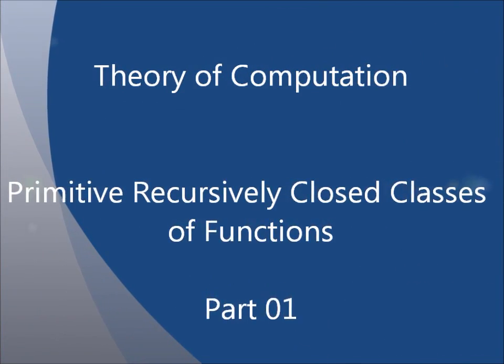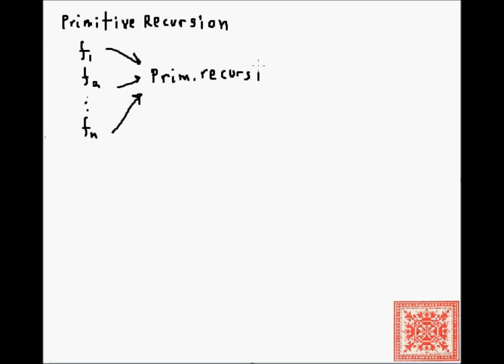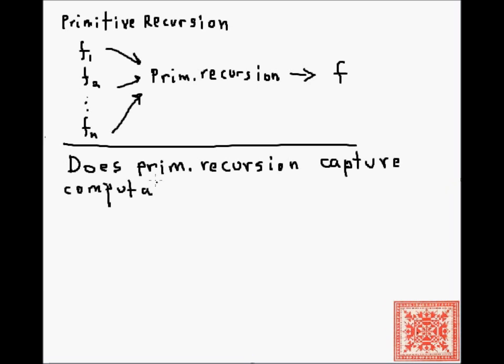In this screencast we'll begin a discussion of primitive recursively closed classes of functions. In our previous screencasts we discussed composition and primitive recursion. Primitive recursion and composition are methods of obtaining new functions from other functions. If we have a set of functions f1 through fn, primitive recursion is a constructor that allows us to take those functions and combine them into a new function.